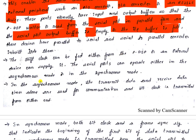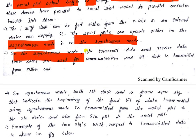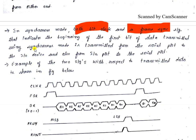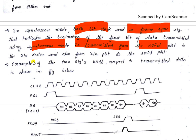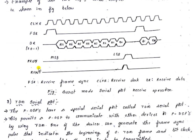The shift clock can be fed either from the programmable DSP or from an external device. The serial port can operate in either asynchronous or synchronous mode. In synchronous mode, a frame synchronous signal indicates the beginning of the first bit of data transmitted, and is sent between the serial port and the input/output device in both directions.